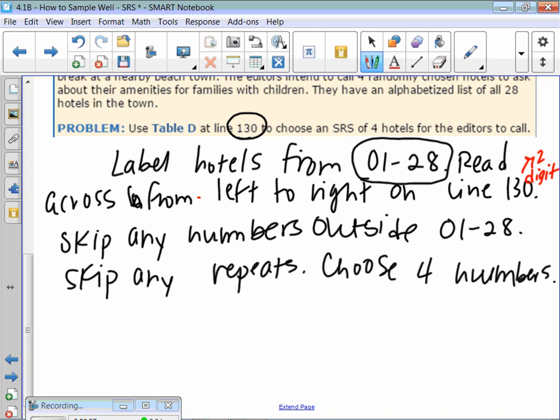If you guys go to line 130 and we just start reading across two-digit numbers, the first number is 69. Is that one inside the range? Nope, so I crossed it off. We're not going to use it. What's the next number? 05. Is that a good one? Yep, because it's between 01 and 28. What's the next number? 16, because it's the 1 and the 6. Even though there's a space, you still do 16. Is that a good one? Yep. And then what's the next number? 48. Too big, so nope. What's the next one? It is 17. That's a good one.